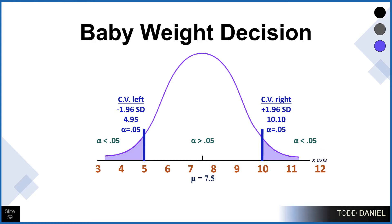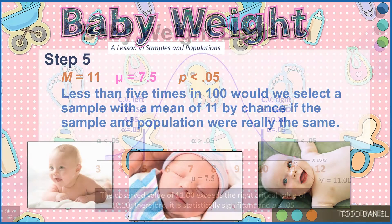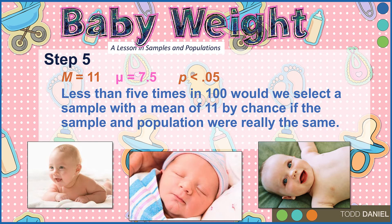We have a sample mean of 11. This observed value of 11 exceeds the right critical value of 10.10, and therefore it is statistically significant at a criterion of p less than 0.05. The mean of 11 for our sample is compared to a population value of 7.5. Less than 5 times in 100 would we select a sample mean of 11 by chance if the sample and population mean were really the same.